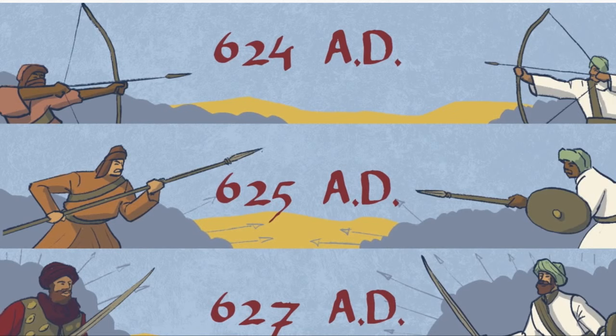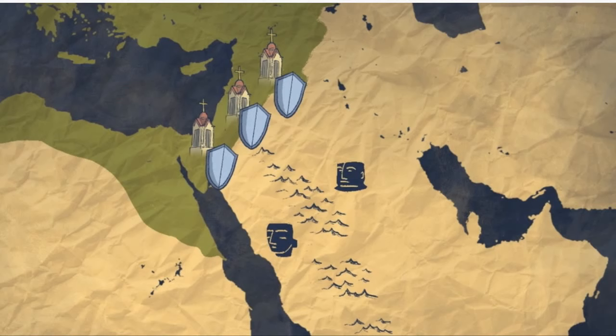The Quran suggests that one goal of these defensive battles was to protect Roman Christian churches to the north from the pagan marauders.